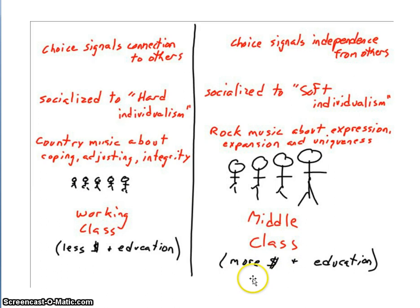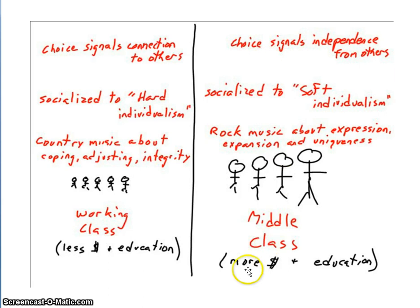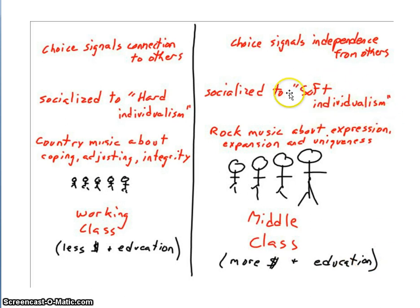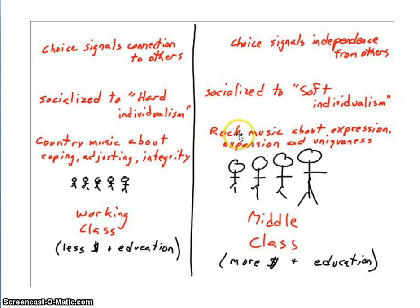For the middle class, with more money and resources available, parents are able to invest in their children and encourage them to be different — and that takes resources. Education equips children to pursue their passions. Children learn to see the world as inviting and welcoming; they can conquer the world with their talents and education — the world is their oyster. Rock music reflects these values of self-expression, uniqueness, and self-identity.